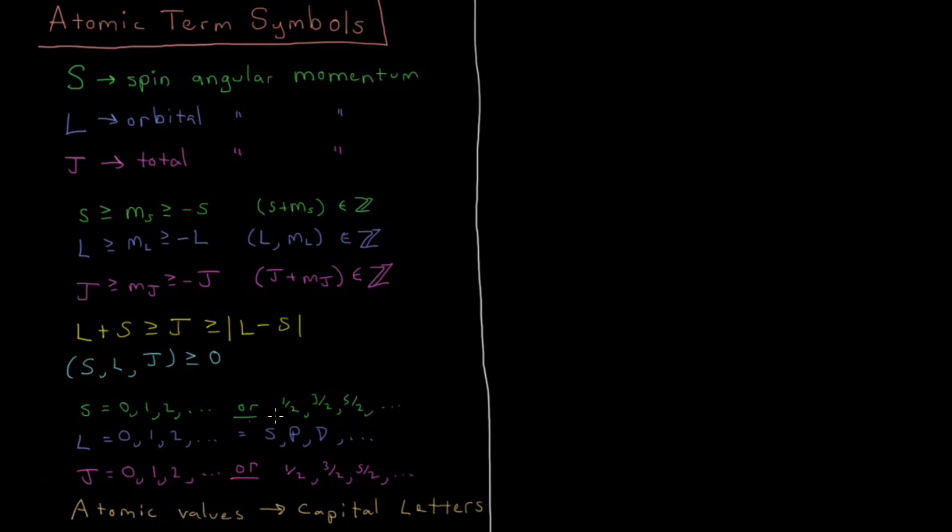So that gives us what I said here. We have s is either going to be integer or half integer values. l is going to be integer values. And these integer values are going to be represented by this capital S, capital P, capital D, etc., the same types of letters that we used for individual orbitals, but now capital letters. And same thing with j. j is going to be either integer or half integer values, depending on what the value of s and l is. And again, these are all going to be capital letters when you're referring to entire atoms.